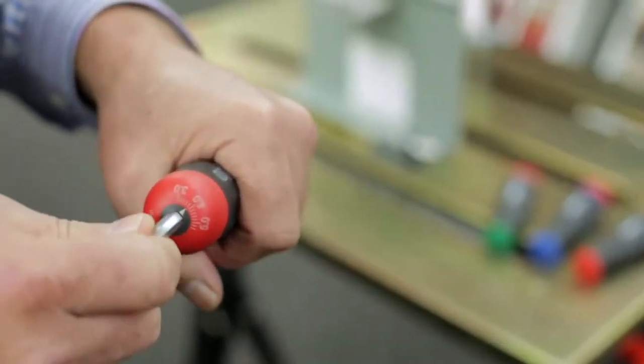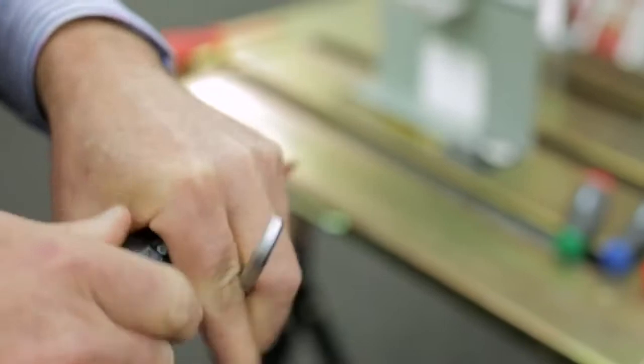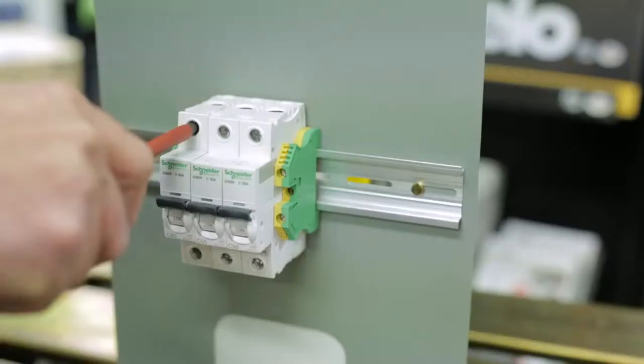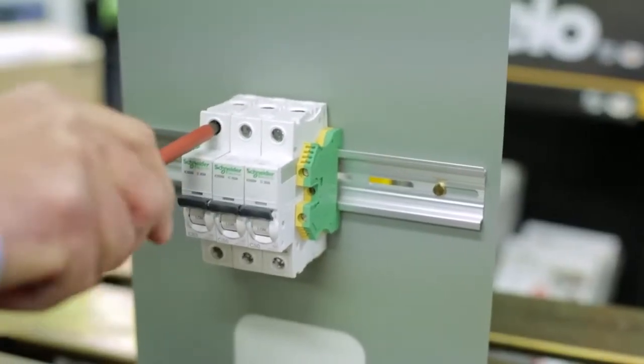Torque settings click into position and the handle automatically limits the transmitted torque to the pre-adjusted value and signals this by a clear acoustic click.